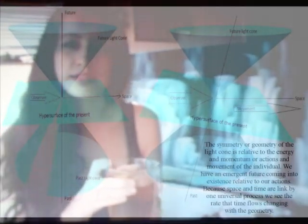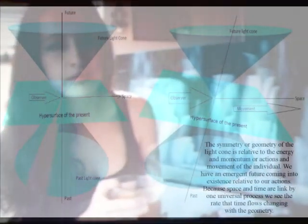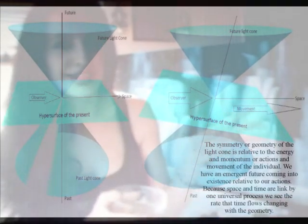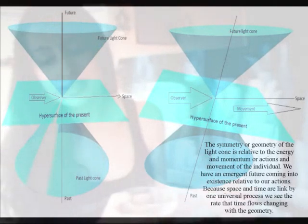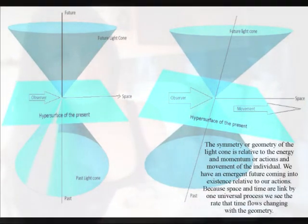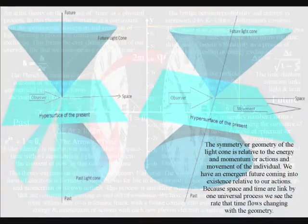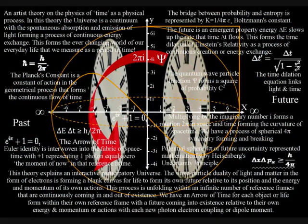Therefore the symmetry or geometry of the light cone is relative to the actions or movement of the individual, and because space and time are linked by one universal process, we see the rate that time flows changing with the geometry.